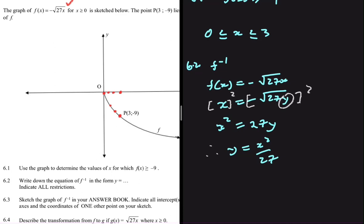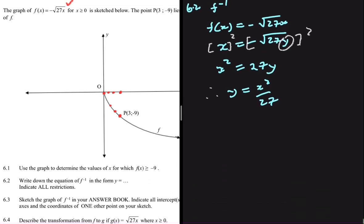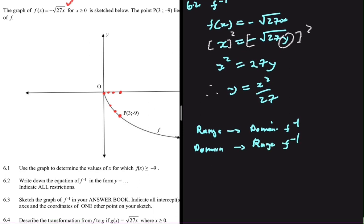So this is the inverse of f of x. But we're told that we need some restrictions, right? So what restrictions are we even talking about? What you have to know is that the range of the graph of your function will be the domain of the inverse, and the domain of the original function will be the range of the inverse.